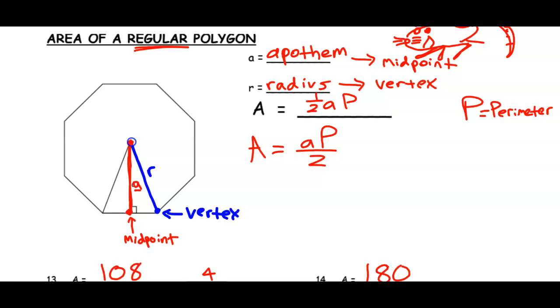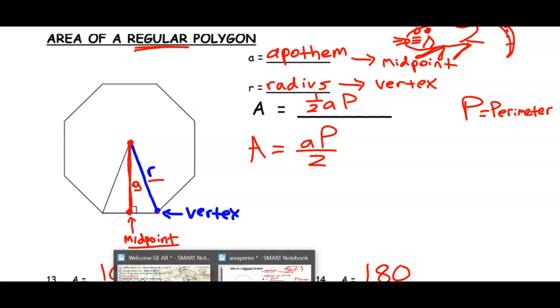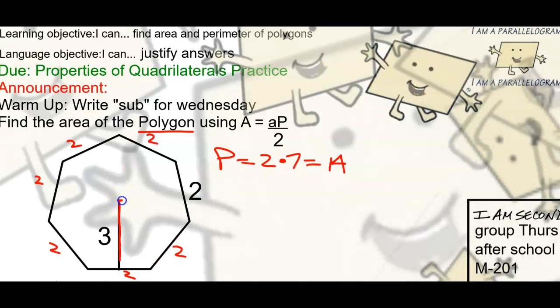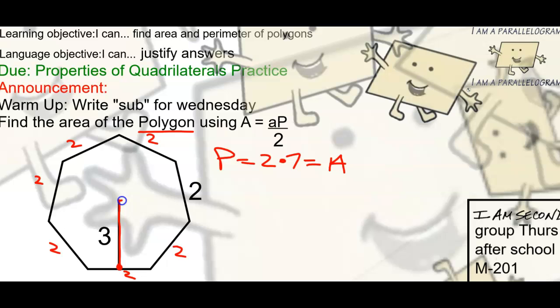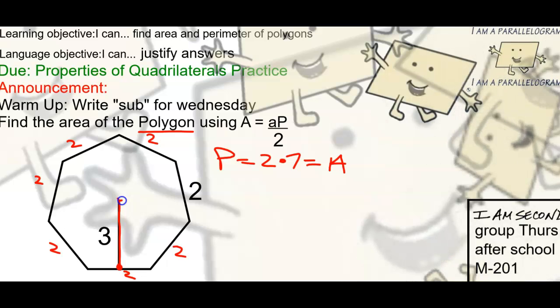If it goes from the center to a vertex, a corner, that's called a radius. There is a radius that goes to the vertex, but we want the apothem that goes to a midpoint. So does this go to a midpoint? It does, right there in the middle.